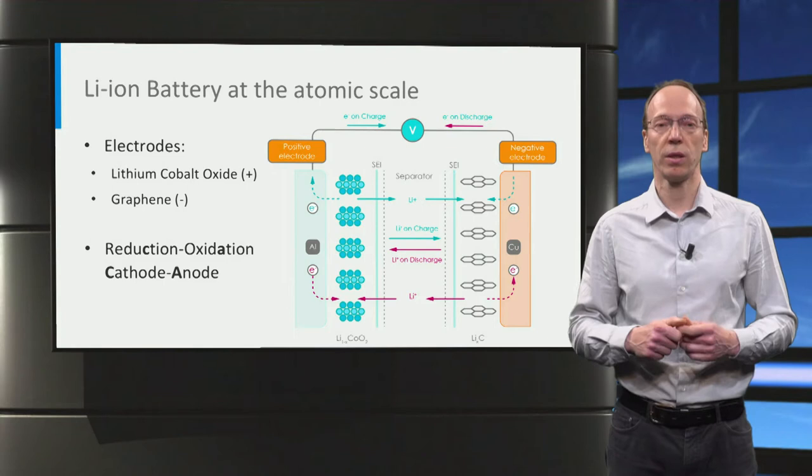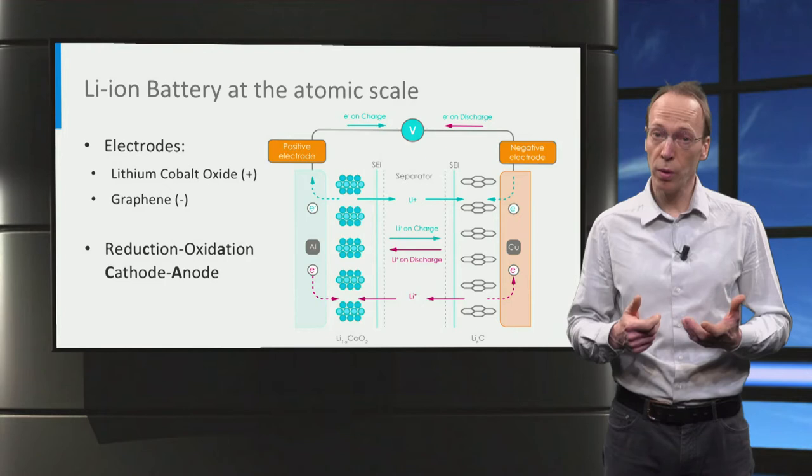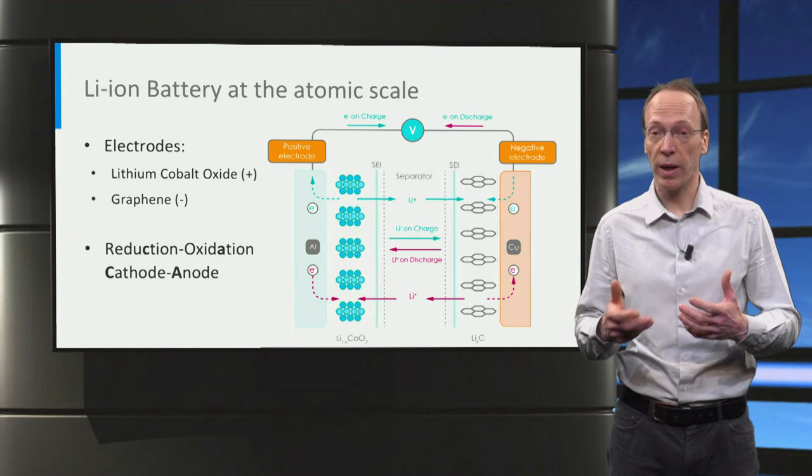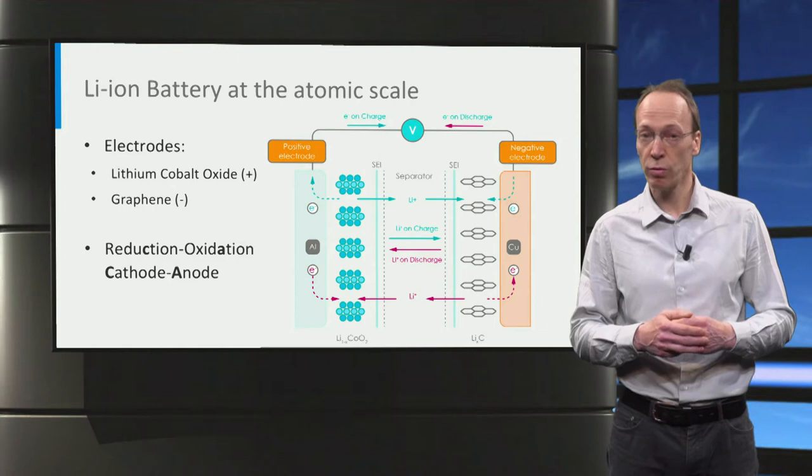During discharge, the negative electrode produces electrons corresponding to oxidation of the graphite, in which case the negative electrode is called the anode. At the positive electrode, electrons are consumed, which corresponds to a reduction of the LCO, in which case the positive electrode is called the cathode.